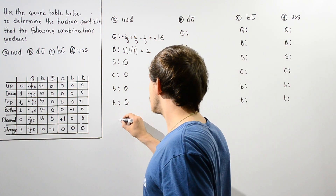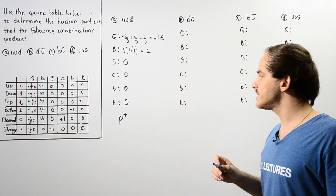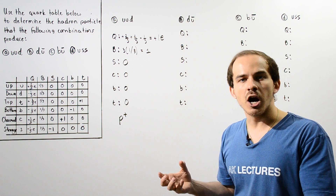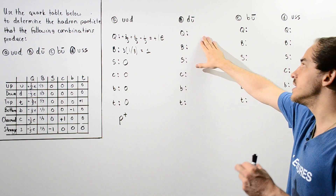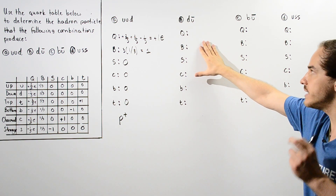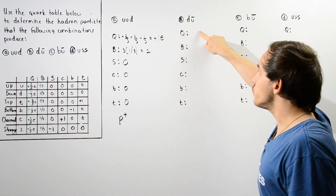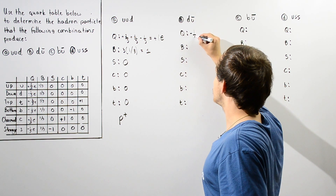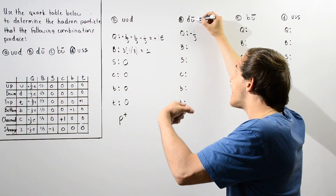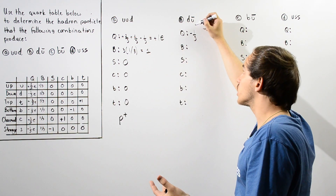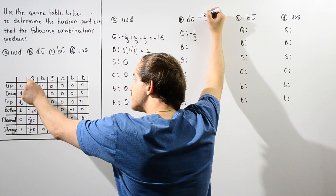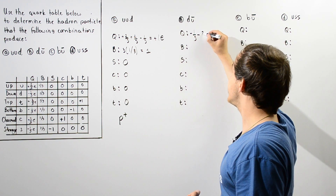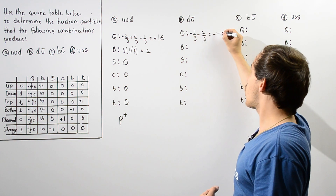This corresponds to a proton — a proton with a positive one charge. What about part B? Now we have a combination of a quark and an anti-quark, so this must be a meson. The charge on the down quark is negative one-third. The charge on the up anti-quark is negative two-thirds, since the up quark has a charge of positive two-thirds. This gives us a total charge of negative one e.